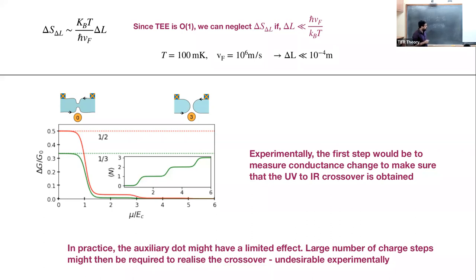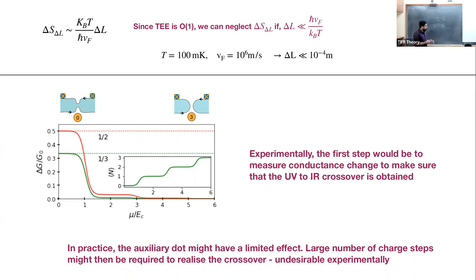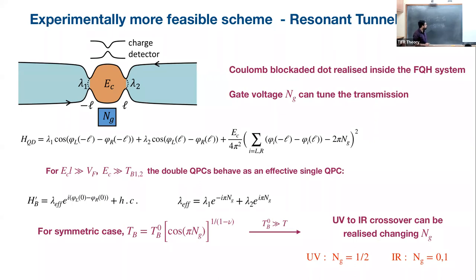There's a problem with this proposal that we realized when we talked with experimentalists. We pitched the idea to some experimental groups, who pointed out that in practice you might actually require a large number of charge steps to realize this crossover. And then doing the Maxwell relation integration to measure entropy becomes very difficult in practice. So this led us to look at a slightly improved and slightly more microscopic proposal.